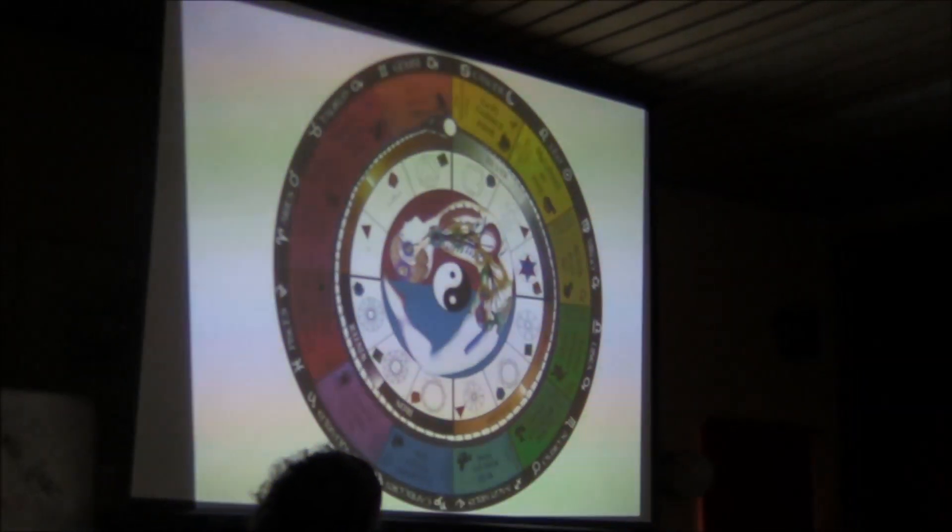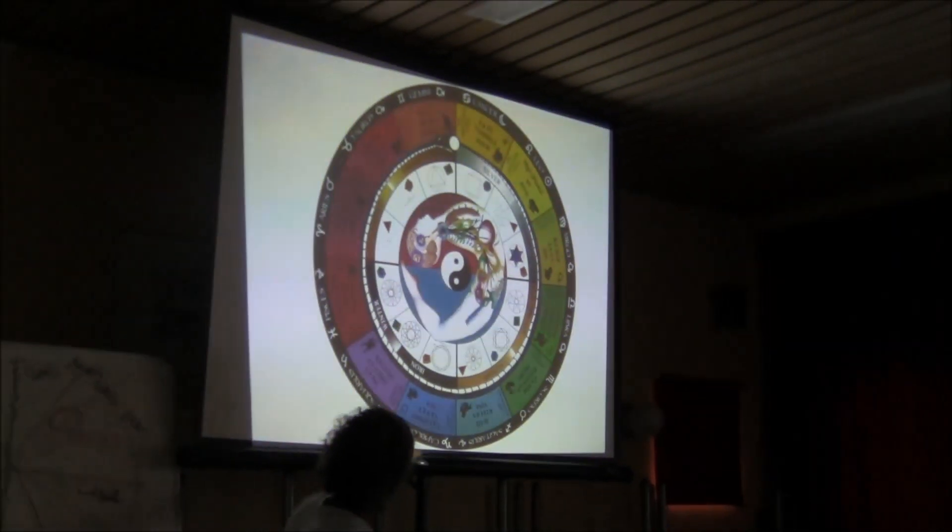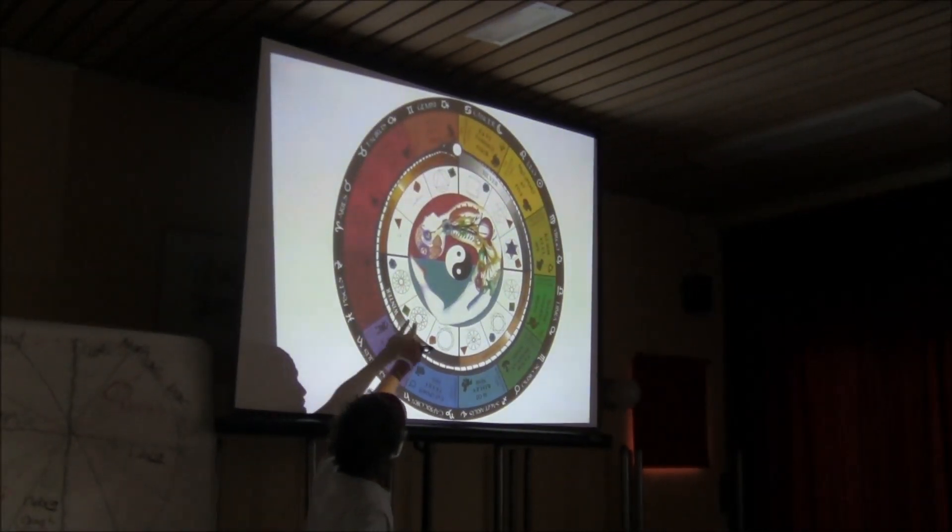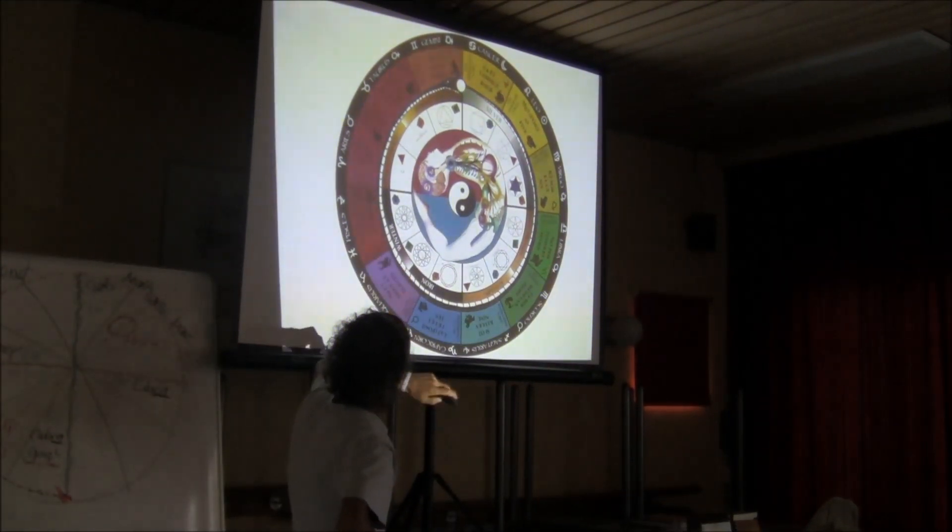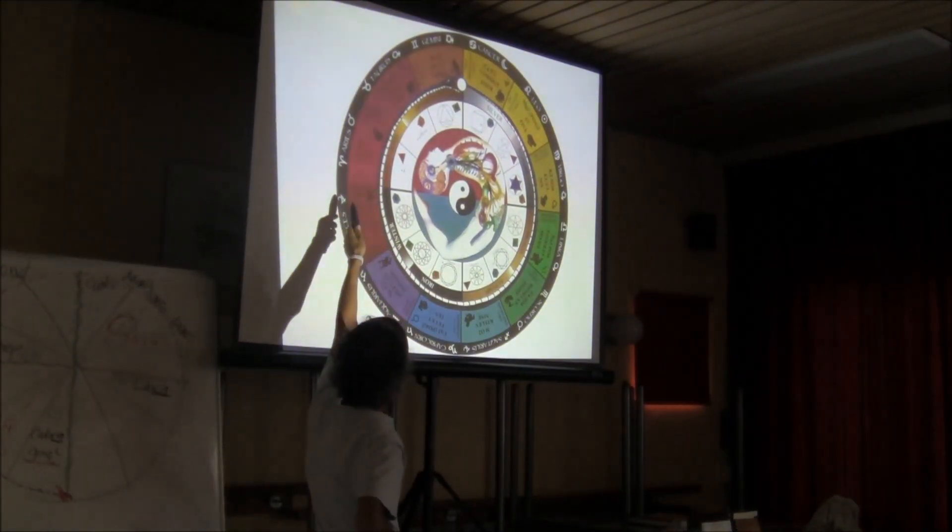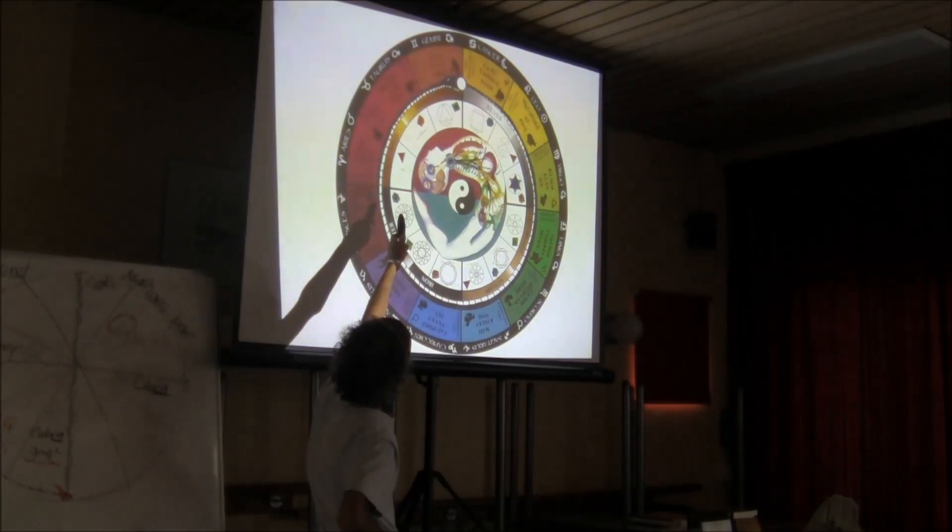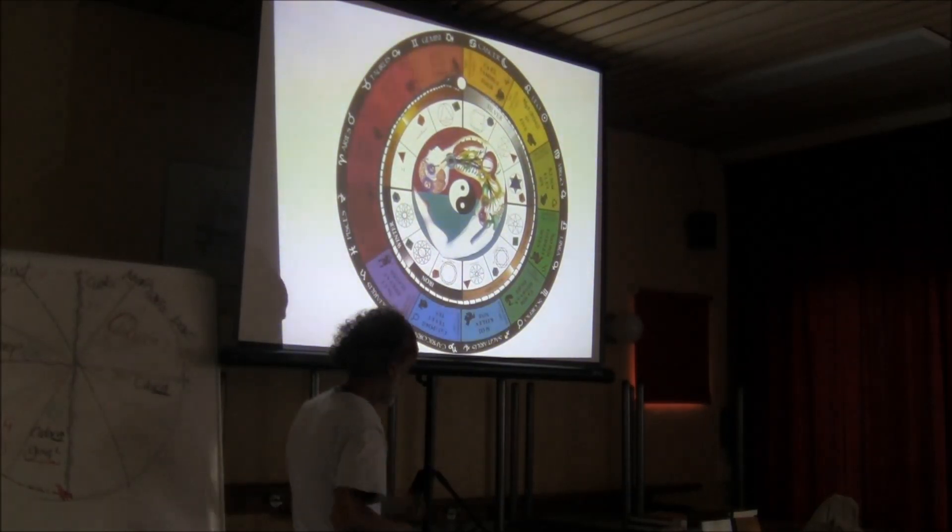As above, so below. And you see all the colors, the 12 colors. You see the sacred geometry in here. And numerology is in here too. Aries is one. That's why Aries says I am. One, a dot, is atom.